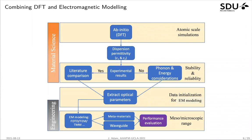Today I want to talk about a combination of density functional theory for atomic-scale simulations with electromagnetic modeling on the mesoscale. We start with DFT simulations, we extract the dispersion permittivity, and then we compare this with experimental results if possible, or we make sure that our simulations are stable enough with phonon and energy considerations. Once we consider our model verified, we extract the optical parameters and initialize data for electromagnetic modeling via Drude-Lorentz models or a dataset for dispersive epsilon values.